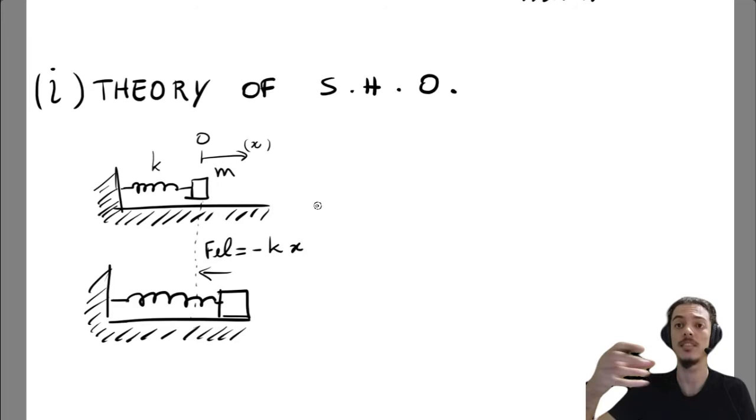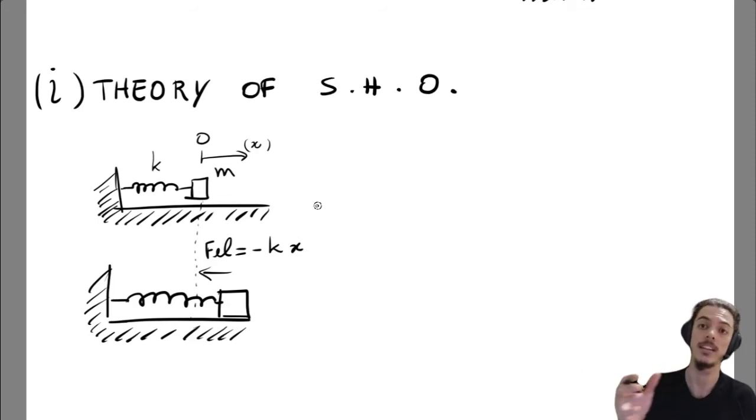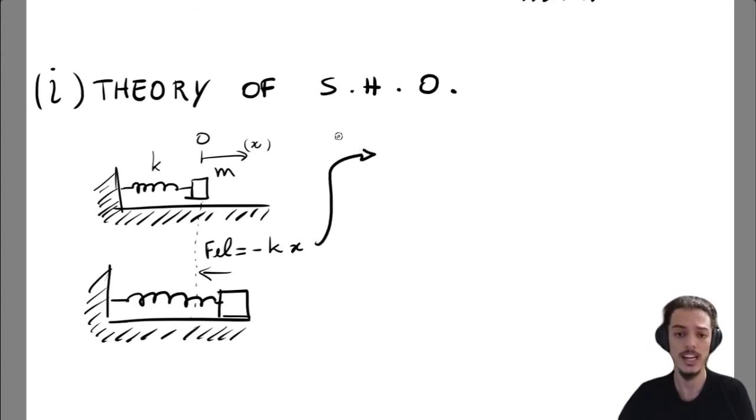In a way that if we displace the mass from its equilibrium position, the force tends to push back or pull back the body to its equilibrium position. So every time we have a configuration like that, the total force is an elastic force.